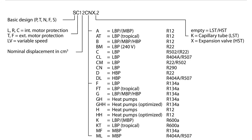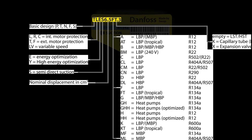The third and fourth digits do not appear in all product numbers for fractional compressors. Since our previous model number example does not use these two digits, we'll switch to a label that does. The third digit of the model number signifies the optimization level of the compressor. The fourth digit signifies the type of suction used, if anything other than direct.